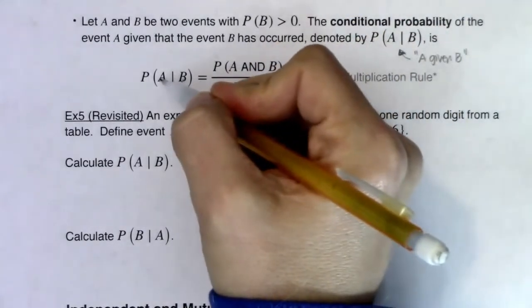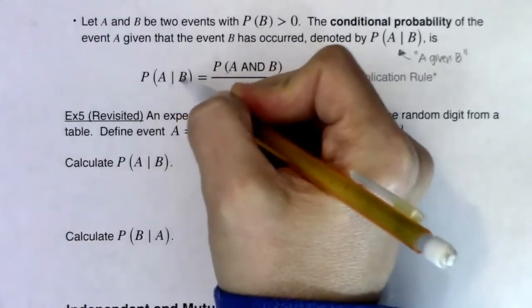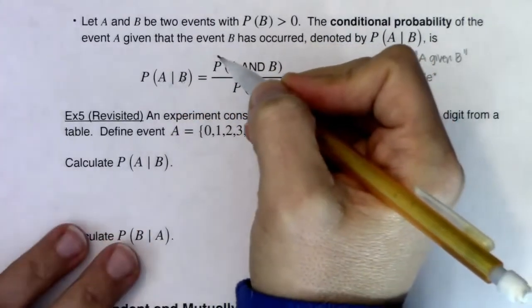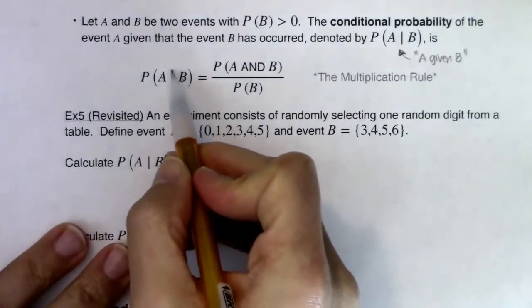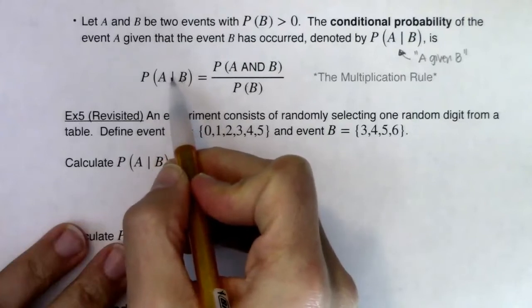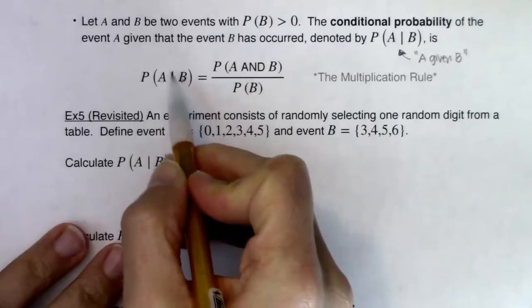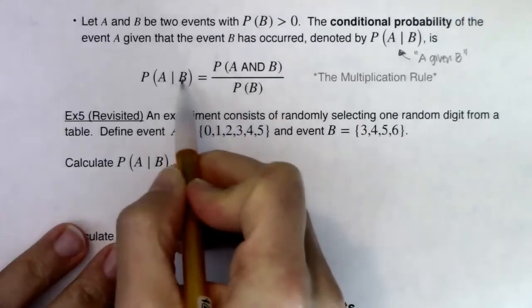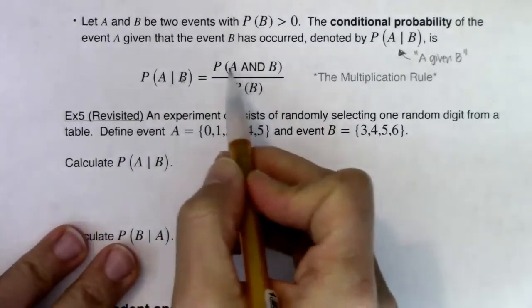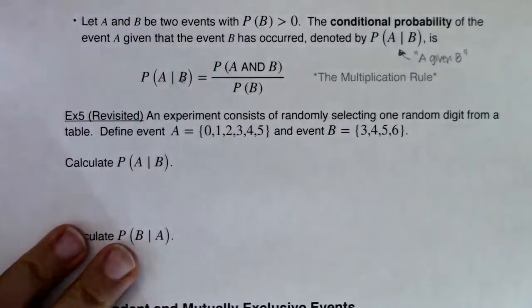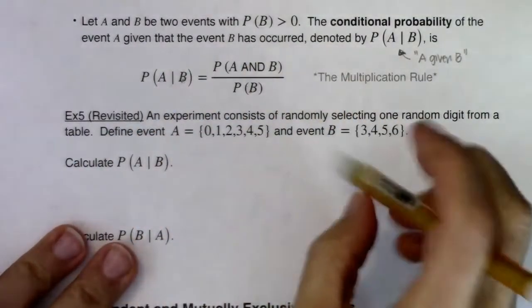Your condition comes after the vertical bar. It always helped me to remember: think of this as numerator, fraction bar, denominator. Whatever letter comes after the vertical bar goes to the denominator. So whatever's after the vertical bar shows up in the denominator, and we've got the probability of A and B in the numerator. You'll always have this formula with you.